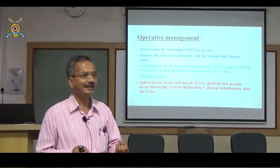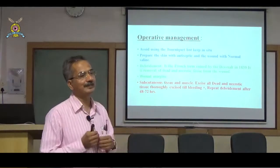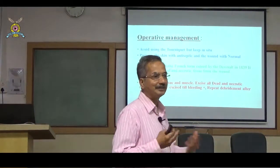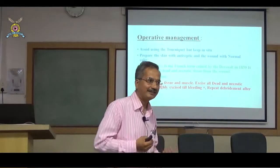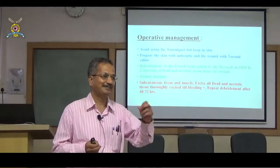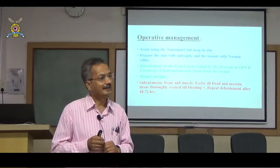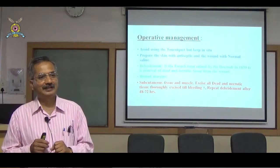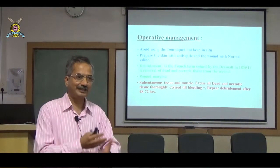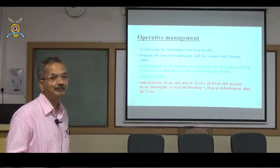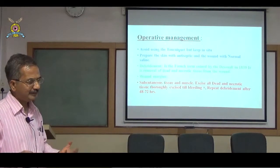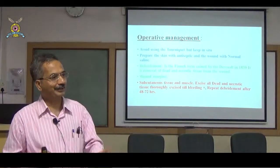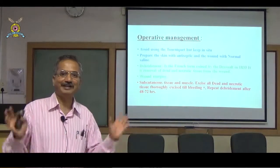Dead muscle appears purplish and dusky, does not contract when cut, and does not bleed. The four C's of viable muscle are: Color (healthy muscle is pink), Consistency (firm), Contractility (contracts when stimulated), and Capacity to bleed. Debridement should be carried out ruthlessly using these criteria, as dead muscle is the best culture medium for bacteria, especially Clostridium.